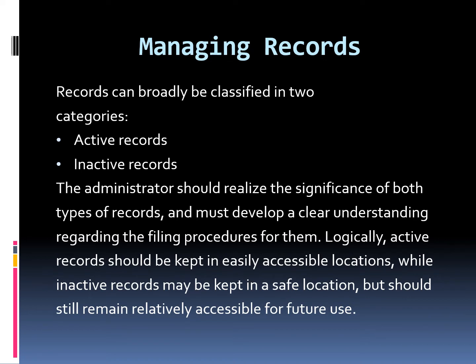Managing records is also a very important part of record management. Records can broadly be classified into two categories: active records and inactive records. The administrator should realize the significance of both types and must develop a clear understanding regarding the filing procedures for them. Logically, active records should be kept in easily accessible locations, while inactive records may be kept in a safe location but should still remain relatively accessible for future use.